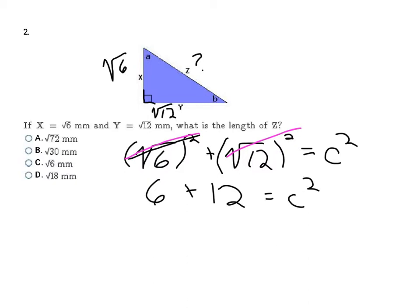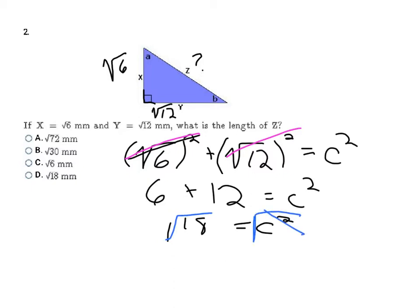That's fairly easy — 6 plus 12 is 18, so 18 equals C squared. Looking at the answers, they all have square roots, so this is not going to be a perfect square. If you think about it: 3 times 3 is 9, 4 times 4 is 16, 5 times 5 is 25 — there's no whole number that multiplies to give 18. So I'm going to take the square root of both sides, which cancels the square, leaving me with C equals the square root of 18. That's my answer, which is D.